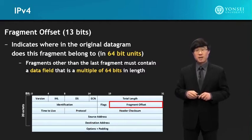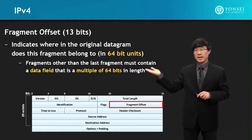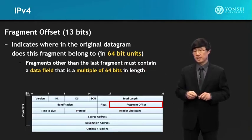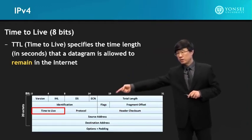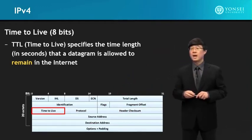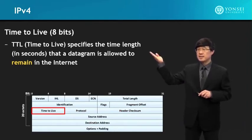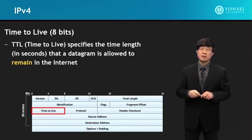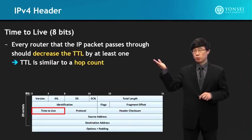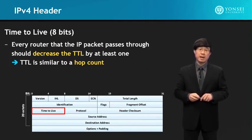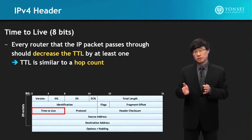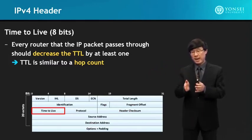The fragment offset indicates where in the original datagram this fragment belongs. Fragments other than the last fragment must contain a data field that is a multiple of 64 bits in length. The TTL (time to live) specifies the time length in seconds that a datagram is allowed to remain in the Internet. Every router the IP packet passes through should decrease the TTL by at least 1, and if the TTL becomes 0 before reaching the destination, the packet will be discarded.